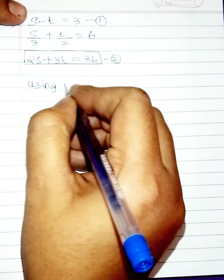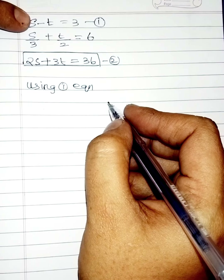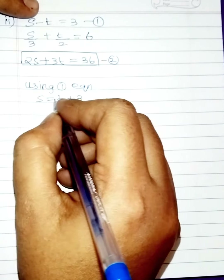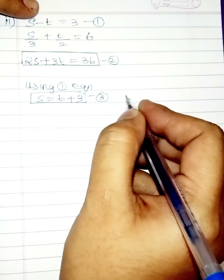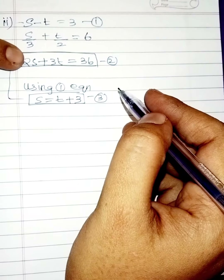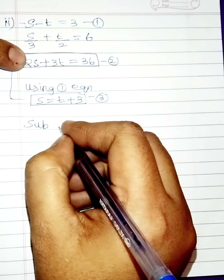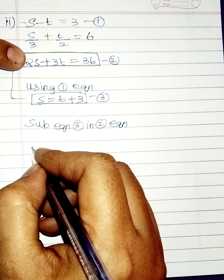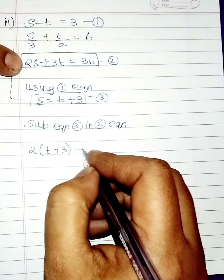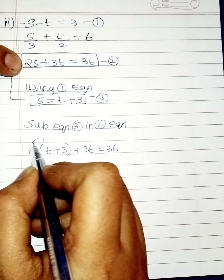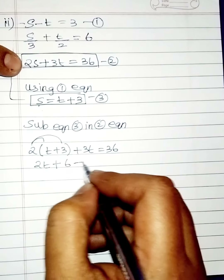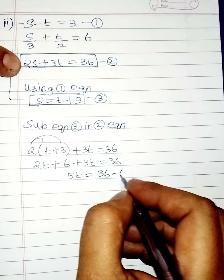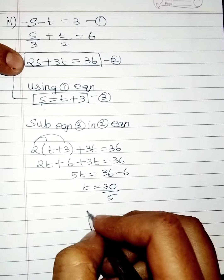From the first equation, find s: taking minus t to the right side gives s equals t plus 3, marking this as the third equation. Substitute equation 3 into the second equation: 2(t plus 3) plus 3t equals 36. Multiplying out: 2t plus 6 plus 3t equals 36. Grouping: 5t equals 36 minus 6, which is 30. Dividing by 5 gives t equals 6.